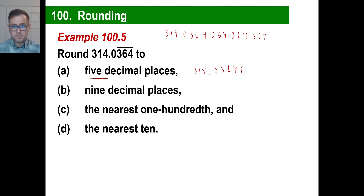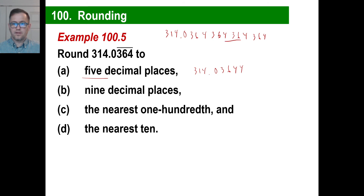9 decimal places — good gravy. Count: 1, 2, 3, 4, 5, 6, 7, 8, 9. We look over and the next digit is just a 4. So the answer to 9 decimal places would be to stop right there without rounding up.